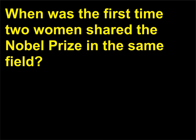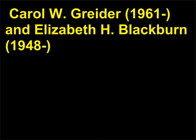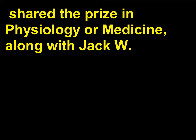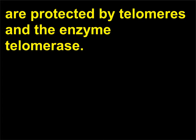When was the first time two women shared the Nobel Prize in the same field? It was not until 2009 that two women shared the Nobel Prize in the same field. Carol W. Greider, 1961, and Elizabeth H. Blackburn, 1948, shared the Prize in Physiology or Medicine, along with Jack W. Szostak, 1952, for their discovery of how chromosomes are protected by telomeres and the enzyme telomerase.